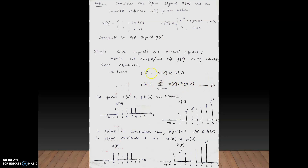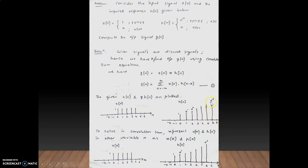We first represent the given equations graphically. x[n] = 1 for n = 0, 1, 2, 3, 4, and zero elsewhere. For h[n], plotting αⁿ from n = 0 to 6: at n = 0 it is α⁰ = 1, at n = 1 it is α¹, at n = 2 it is α², and so on up to α⁶ at n = 6. All other values are zero.